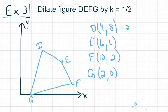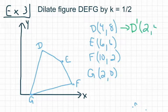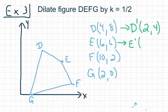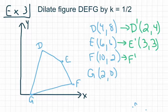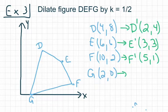For D prime, multiplying 4, 8 by one half gives us 2, 4. For E prime, multiplying 8, 6 by one half gives us 4, 3. For F prime, multiplying 10, 2 by one half gives us 5, 1. And for G prime, multiplying 2, 0 by one half gives us 1, 0.